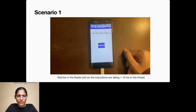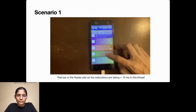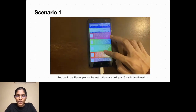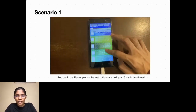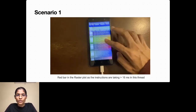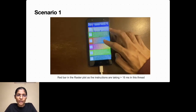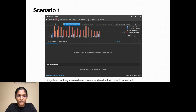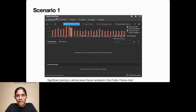The fourth part is the CPU Profiler — for every event selected in the Timeline Events Chart, you get full CPU profiling information with Bottom Up, Call Tree, and CPU Flame Chart tabs, the same as discussed earlier. In scenario one, when we rapidly scroll down the screen, the user experience is poor due to janking. You can see a red bar in the raster plot, meaning instructions are taking more than 16 milliseconds to run. In the Flutter Frames Chart, almost every frame shows a jank.